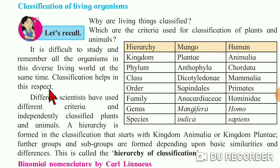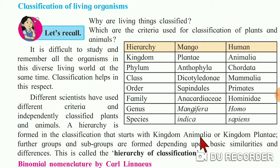If we do the classification of plants and animals, we can study them and remember them more easily. Different scientists have used different criteria and independently classified plants and animals. A hierarchy is formed in classification that starts with Kingdom Animalia for animals or Kingdom Plantae for plants. Further groups and subgroups are formed depending upon basic similarities and differences.